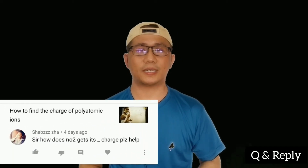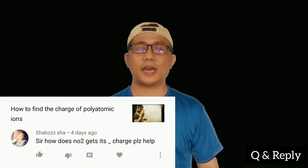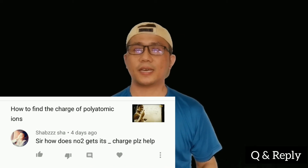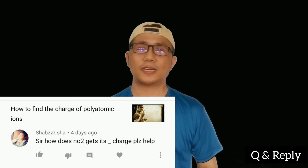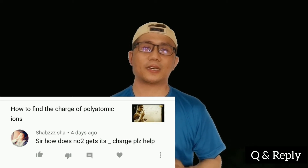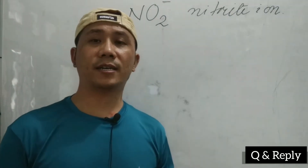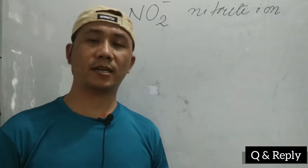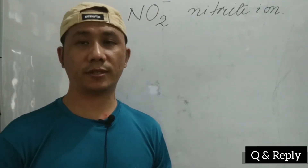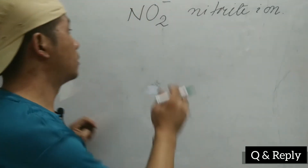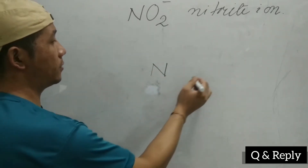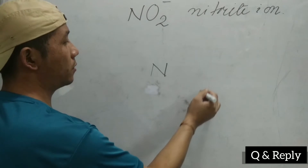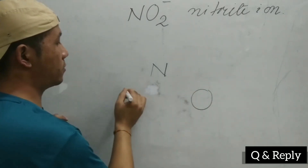The first question is given by Sabasa. Sabasa asks: how does NO₂, that is the nitrite ion, get its negative charge — the minus charge? So here it comes — the charge and how we can find it out. Let us see here: what is nitrite? Nitrogen is in the middle and two oxygens are here.